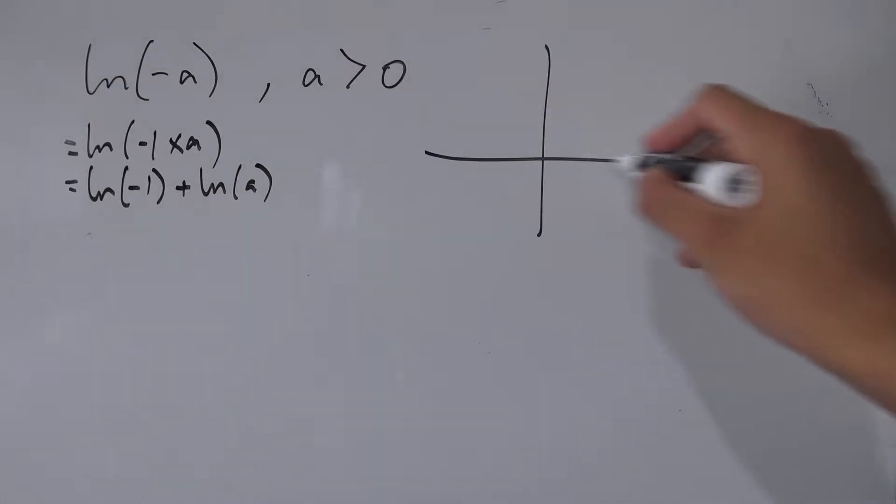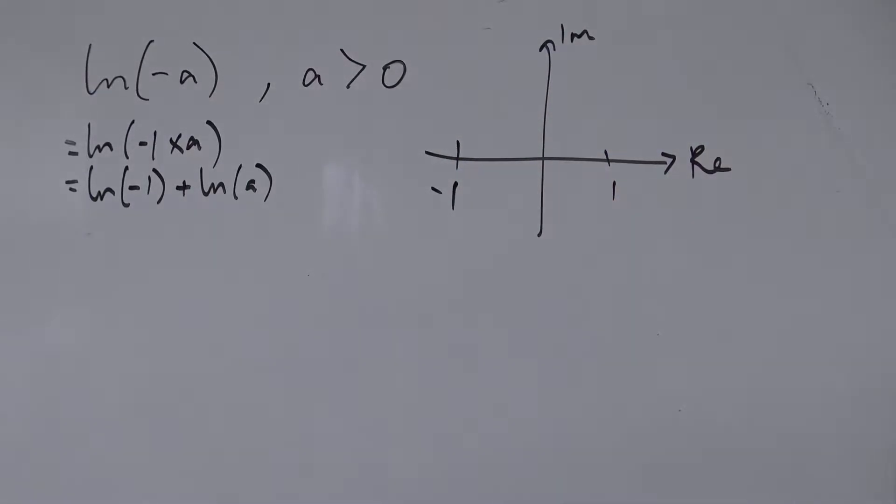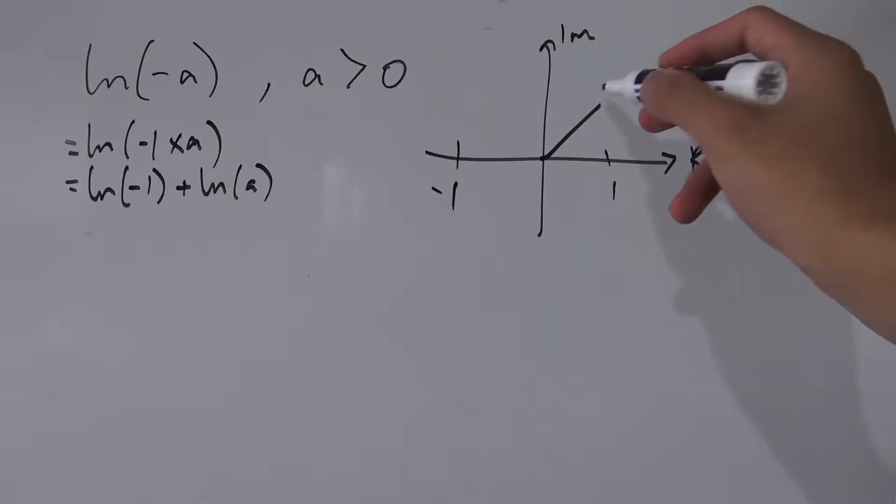So let's draw up the complex plane here. This is the imaginary axis, this is the real axis. And this is our one, and this is the negative one we want to find. Well, if you look at it in the complex plane...